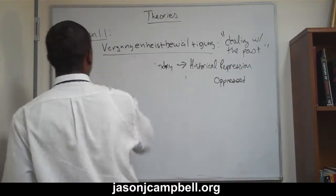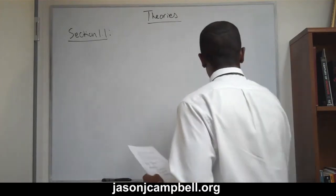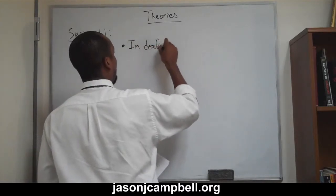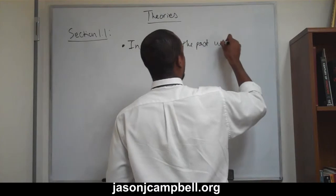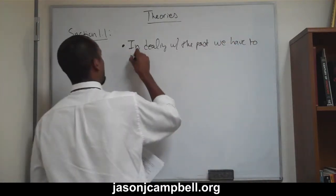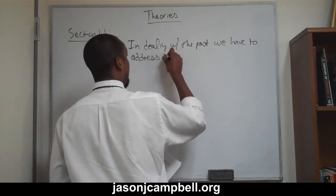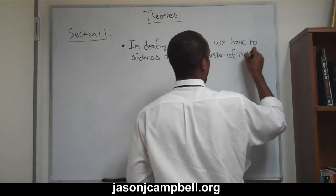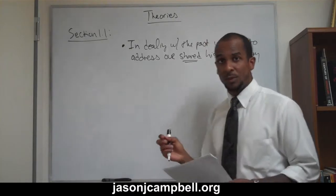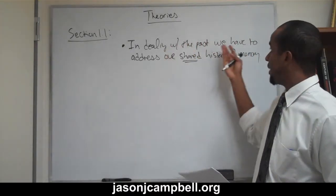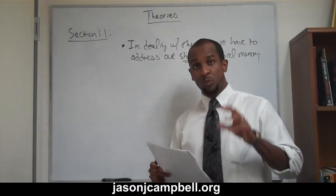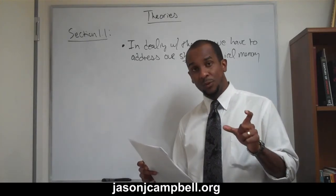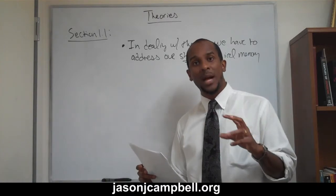So I want to take the time to make sure we understand what the segregation of historical memory means. In dealing with the past, we have to address our shared historical memory. Du Bois says in Black Reconstruction in America that our historical memory becomes itself segregated. And the question obviously becomes: what does Du Bois mean by segregation?